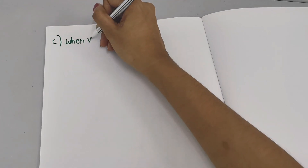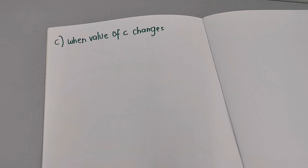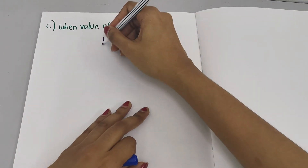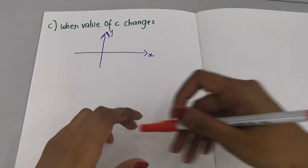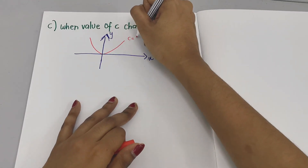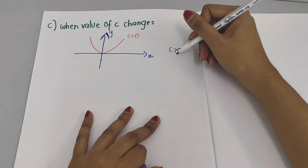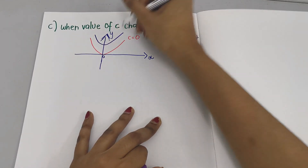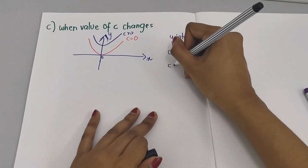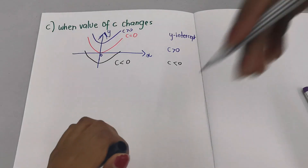Now the third one — when the value of C changes. The shape will not change, but this time the position of the graph will change. Let's look at the happy graph first. So we have X and Y axes, and let's say C equals 0 is here. Now what happens when C is greater than 0? C is actually the Y-intercept. When the Y-intercept is greater than 0, the graph cannot be below here — automatically it goes up. So this is C greater than 0. What happens when C is less than 0? Since C is the Y-intercept, it needs to be at a negative intercept. So this is C less than 0.